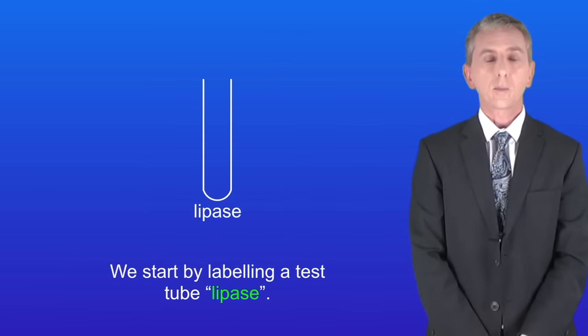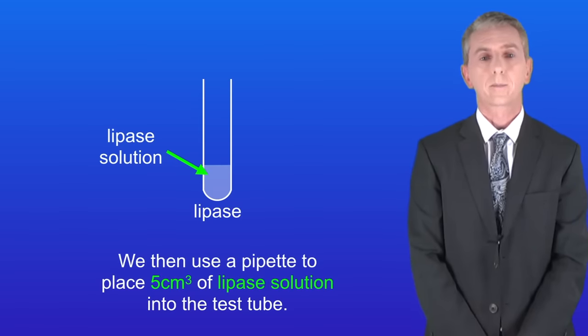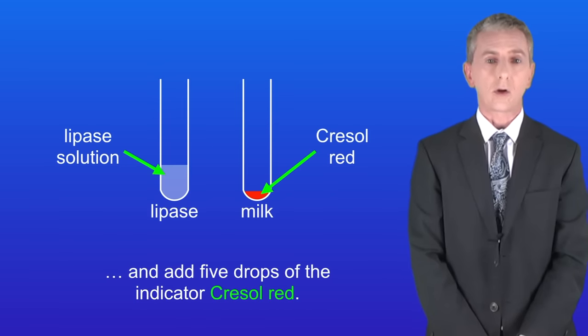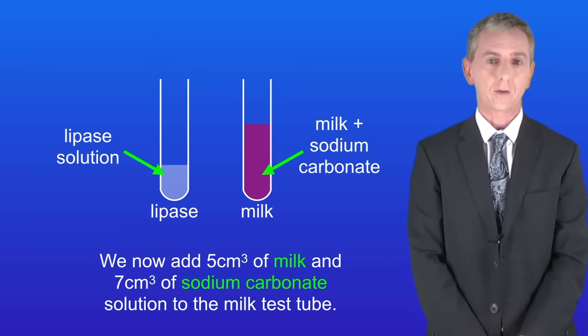We start by labeling a test tube 'lipase'. We then use a pipette to place 5 cm³ of lipase solution into the test tube. We now label another test tube 'milk' and add 5 drops of the indicator cresol red. We now add 5 cm³ of milk and 7 cm³ of sodium carbonate solution to the milk test tube.